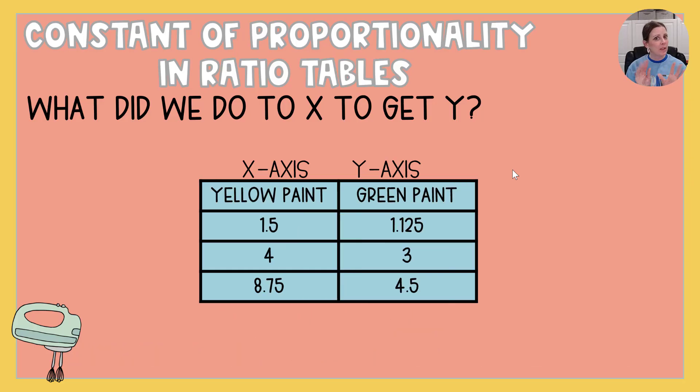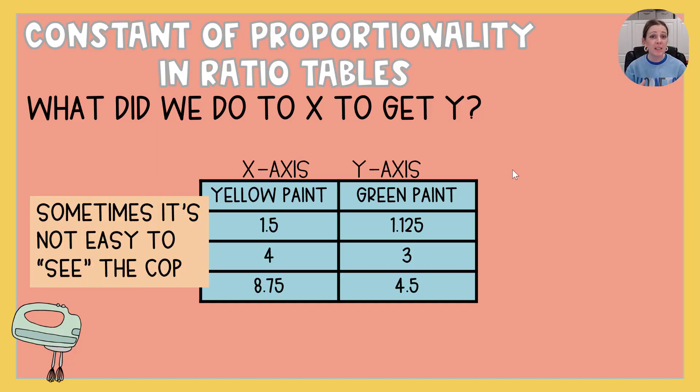Now, this one, a little more challenging simply because, as you can tell, sometimes it's not easy to see that constant of proportionality. Those others were simple, times two, times one half. They jump right out at you. But sometimes our numbers are not quite as pretty and it doesn't jump out at you. So when that happens, what do we do to figure it out? Well, we've got this little formula that just appeared on your screen. And it's y divided by x equals k.